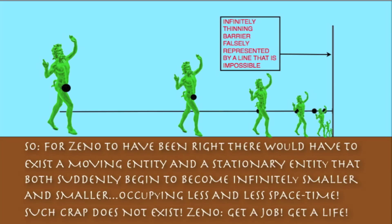So, for Zeno to have been right, there would have to exist a moving entity and a stationary entity that both suddenly begin to become infinitely smaller and smaller, occupying less and less space-time. Such crap does not exist.